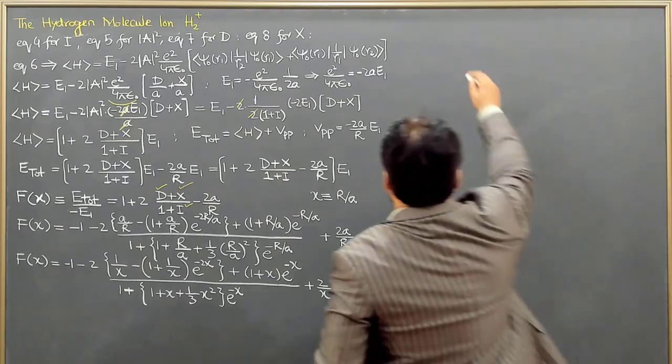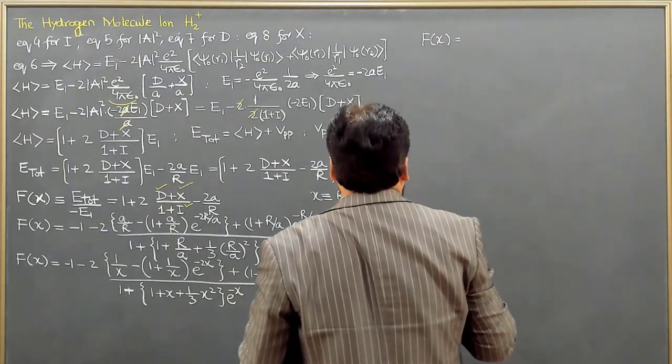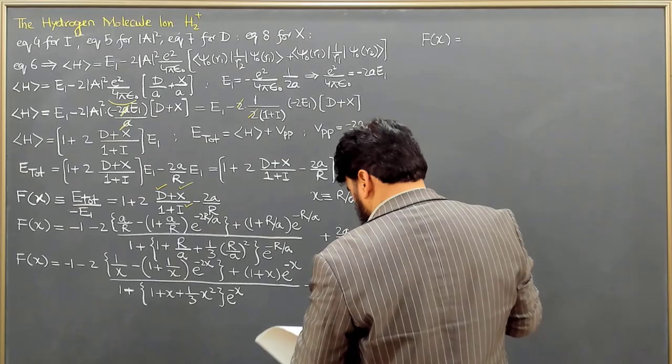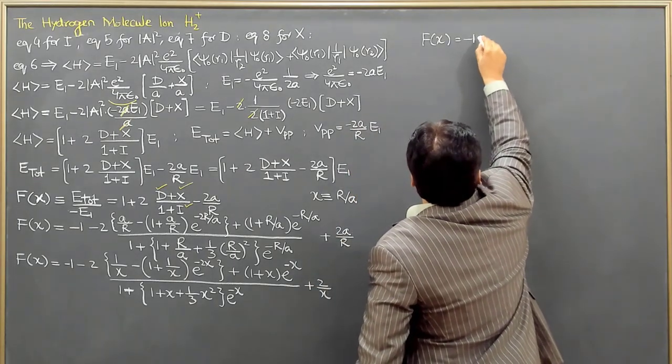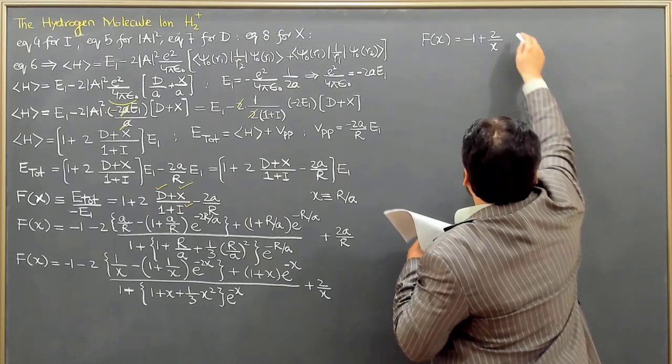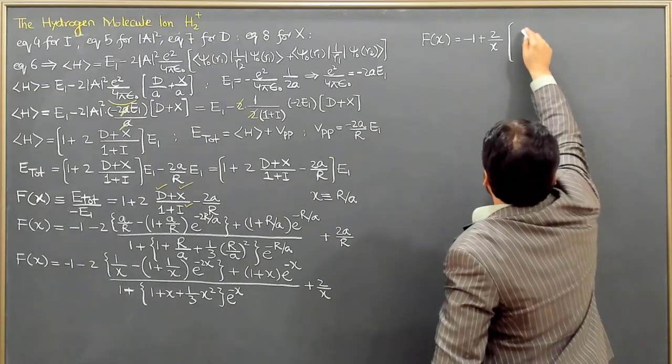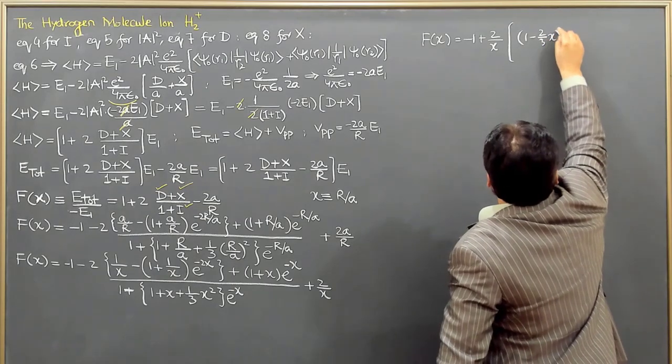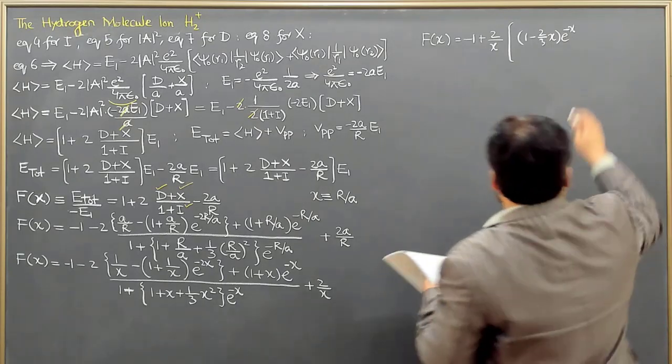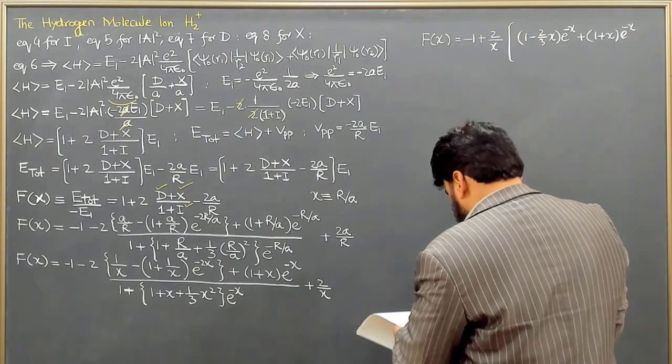Finally what we will have is f of x equal to—the final form of f of x is equal to minus 1 plus 2 over x minus 1 plus 2 over x, and then we have 1 minus 2 over 3x times e to the power minus x, and plus 1 plus x times e to the power minus 2x here.